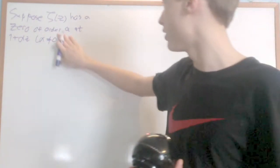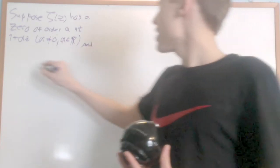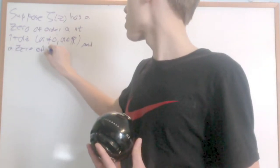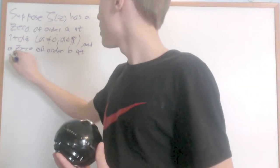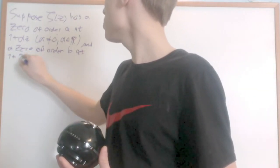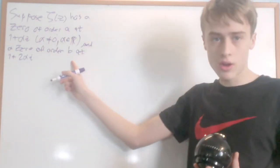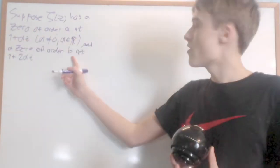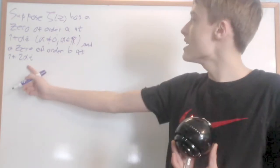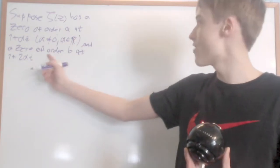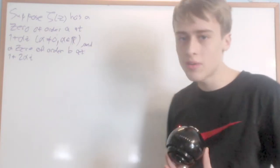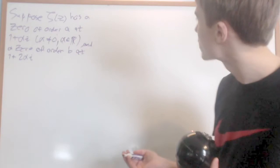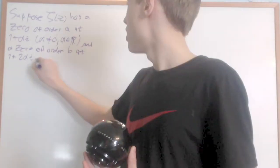Suppose ζ(z) has a zero of order a at 1 + iα and a zero of order b at 1 + 2iα, where α is real. Note that b can be 0 and a can be 0 — if b or a are 0, then those aren't actually zeros of the zeta function, they just sort of looked like they were originally.